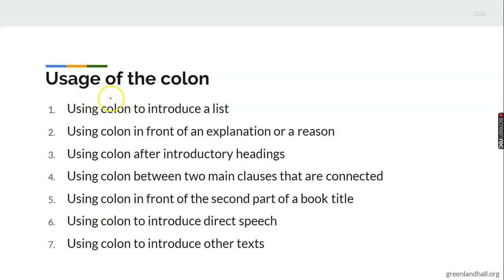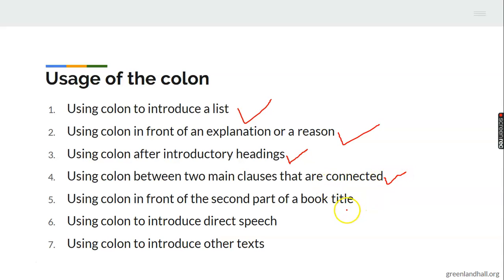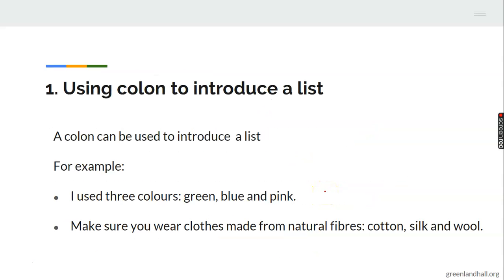There are different ways you can use the colon. You can use a colon to introduce a list, in front of an explanation or reason, to introduce a list after introductory headings, between two main clauses that are connected, in front of the second part of a book title, to introduce direct speech, and to introduce other text. We're going to look at all these usages one after the other. Number one: using a colon to introduce a list.